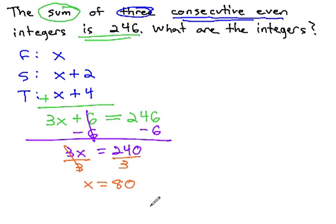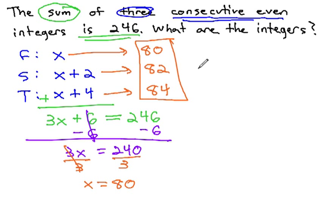The first integer is 80. The second integer is x plus 2, or 80 plus 2, which is 82. The third integer is x plus 4, or 80 plus 4, which is 84. Now we have three consecutive even integers: 80, 82, and 84, whose sum is 246.